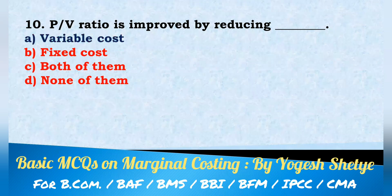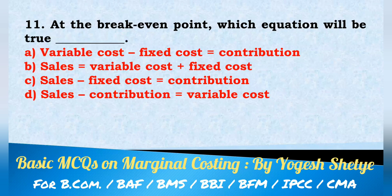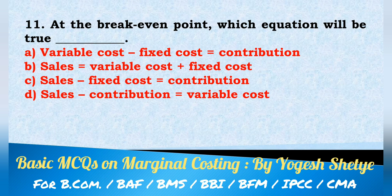Question 11: At the break-even point, which equation will be true? Options: variable cost minus fixed cost is equal to contribution; sales is equal to variable cost plus fixed cost; sales minus fixed cost is equal to contribution; sales minus contribution is equal to variable cost. At the break-even point, sales is equal to variable cost plus fixed cost, as there is no profit, no loss.